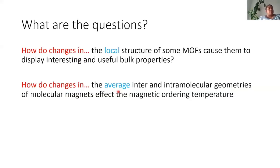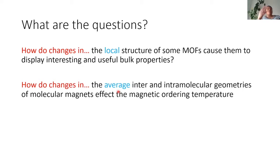I'm going to talk about two different projects with two different questions. The first is how changes in the local structure of some MOFs cause them to display interesting and useful bulk properties. The second is how changes in the average inter and intramolecular geometries of molecular magnets affect their magnetic ordering temperature and the magnitude of the exchange interactions.